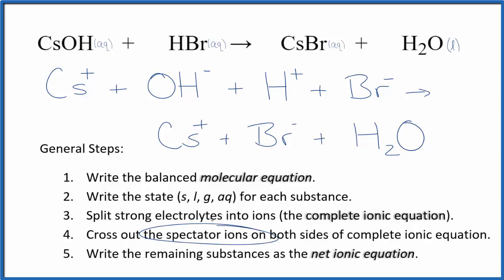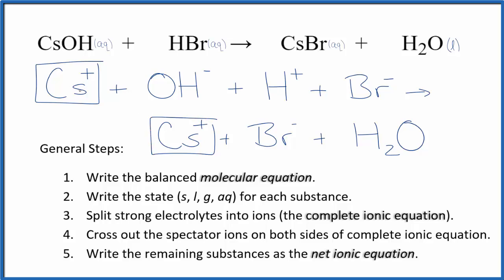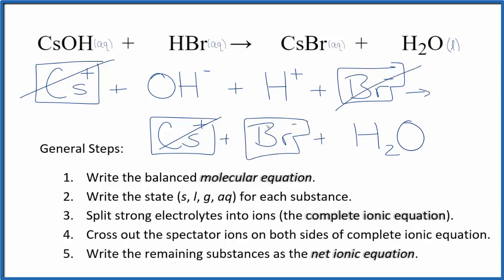Now we'll cross out spectator ions — the ones that appear on both sides. In the reactants I see the Cs⁺ cesium ion, and it's also in the products, so that's a spectator ion — we cross it out. The bromide ion is in the reactants and again in the products, so that's a spectator ion too — we cross that out. What's left is the net ionic equation for CsOH plus HBr.